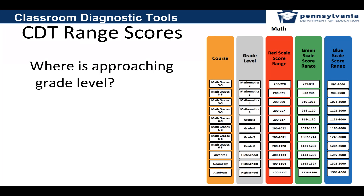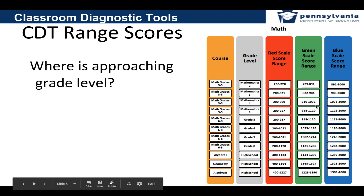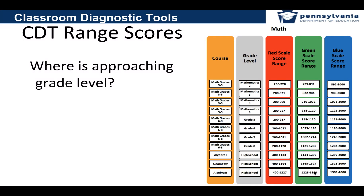Where is approaching grade level? Approaching grade level begins to fall in the upper green range — we may even refer to it as the middle of the green.